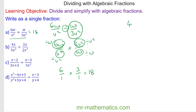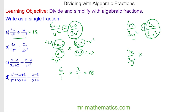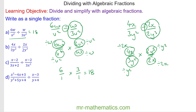For question b we have 4x over 3y squared divided by 2x over 2y cubed. We do the opposite of divide which is times, then find the reciprocal of the second fraction by flipping it upside down. We cross-simplify by dividing both by the common factor 2x, and simplify by dividing both by y squared. So 4x divided by 2x is 2, 3y squared divided by y squared is 3, 2y cubed divided by y squared is 2y, giving us 4y over 3.